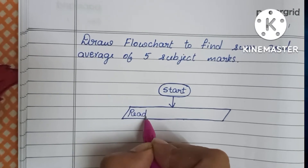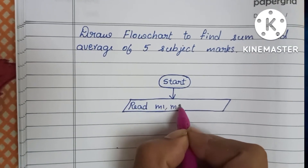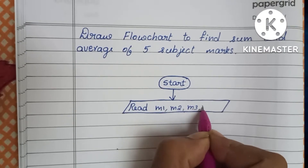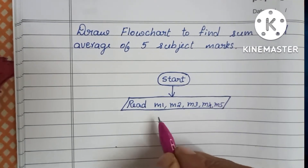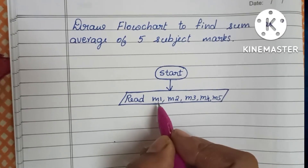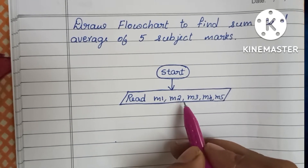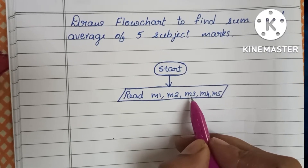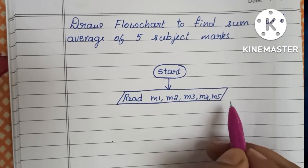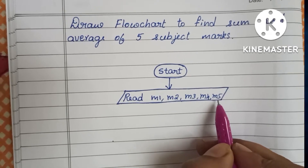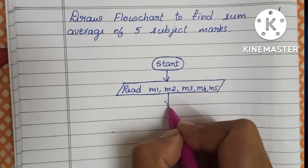We read 5 subject marks: m1, m2, m3, m4, and m5. Here m1 is the first subject marks, m2 is the second subject marks, m3 is the third subject marks, m4 is the fourth subject marks, and m5 is the fifth subject marks.